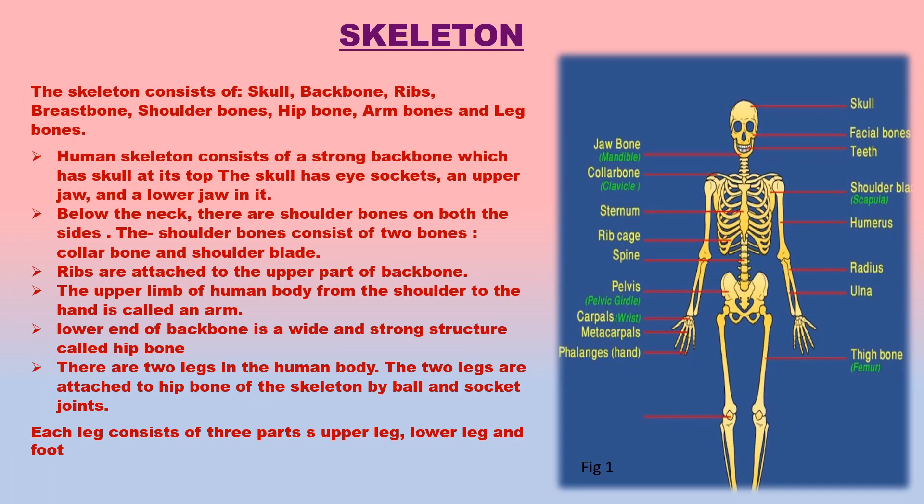The skeleton consists of skull, backbone, ribs, breast bone, shoulder bones, hip bone, arm bones and leg bones. A simple diagram of the human skeleton showing the main bones is given in figure 1.